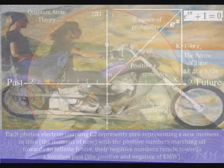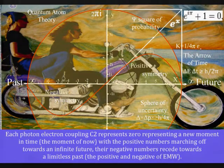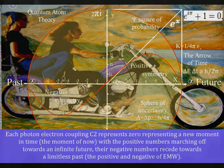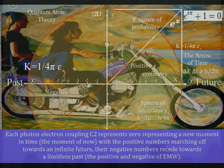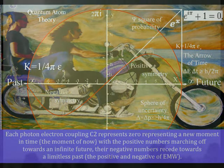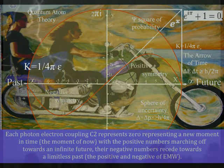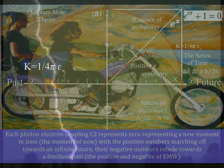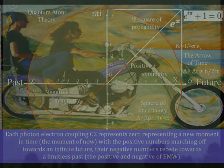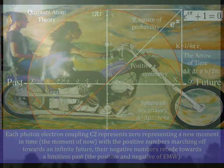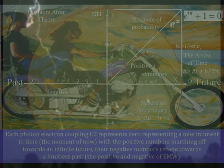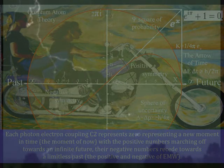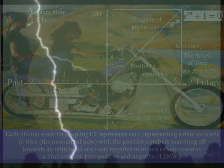This might seem surprising, but the probability function that forms the uncertainty principle also forms the movement of electric charge, forming the flow of electric current with electrical potential. In this theory, electrical potential and the individual's future potential are the same within their own reference frame.